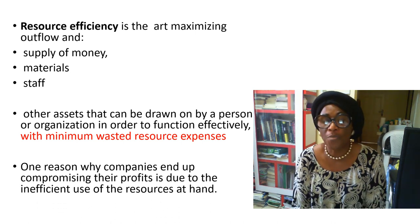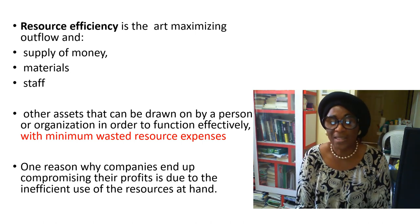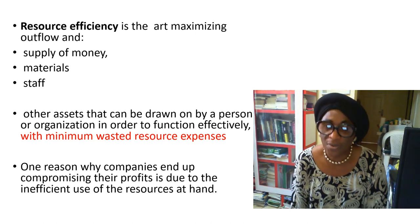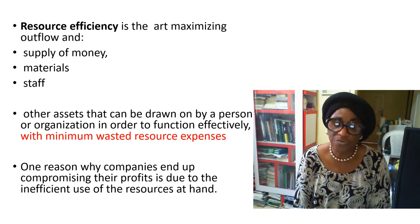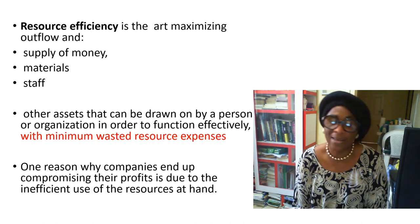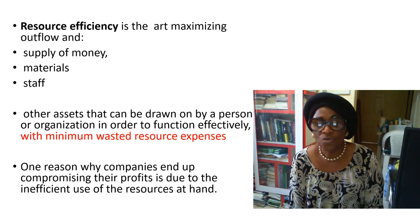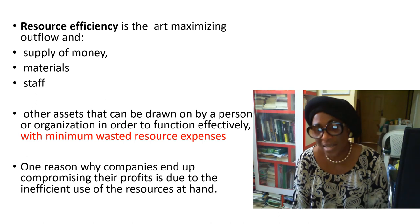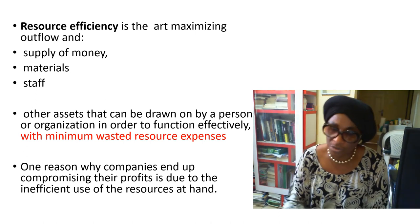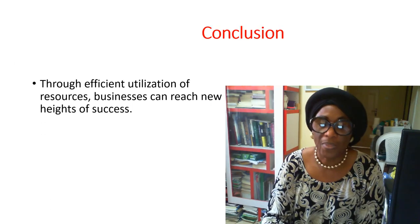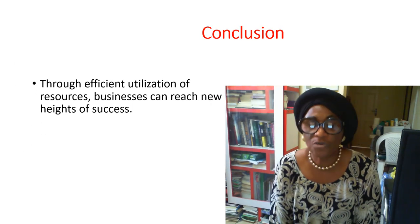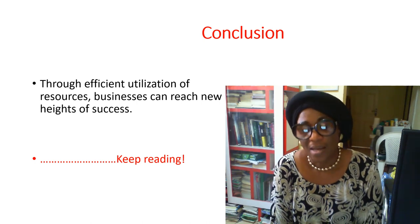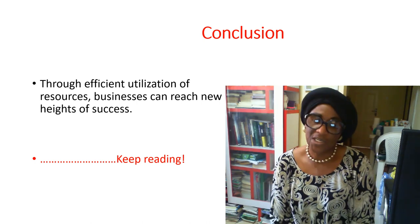One reason why companies end up compromising their profit is due to inefficiency in the use of resources at hand — whether in terms of recruitment, money supply, or material. When you do the wrong thing, you can end up compromising the profit you could have gotten. In conclusion, with the efficient utilization of resources, a business can grow to great heights of success.